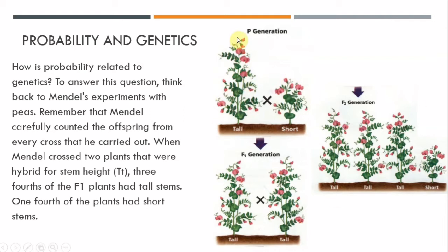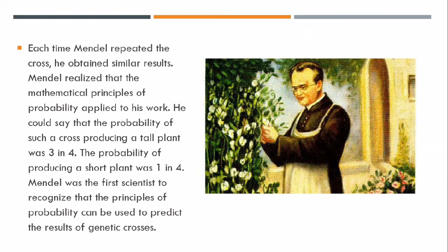Mendel crossed a tall pea plant with a short pea plant. F1, or Generation 1, all the plants were tall. In Generation 2, you can see that three plants were tall and one of them was short. Mendel carefully wrote down all this information. Each time Mendel repeated the cross, he obtained similar results.